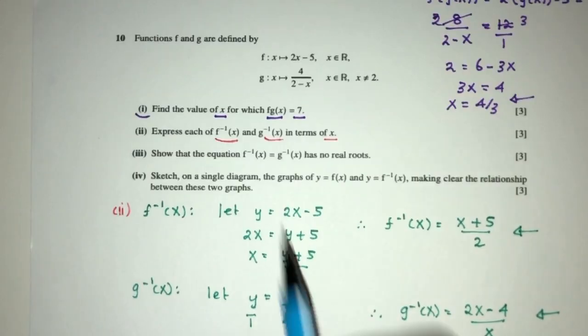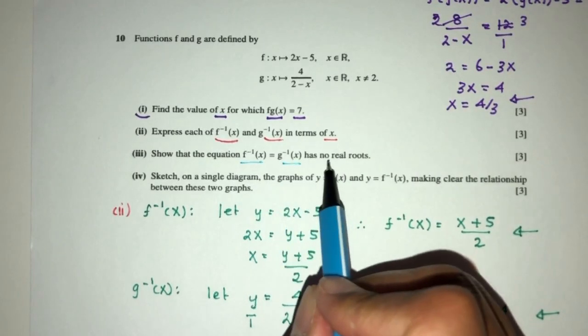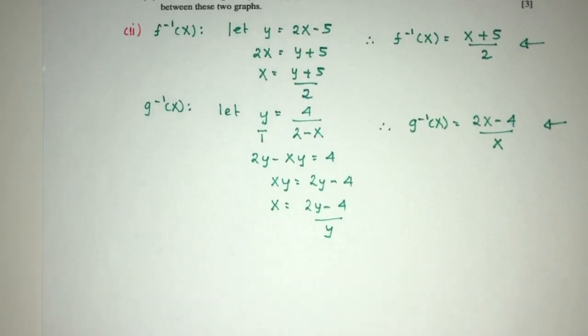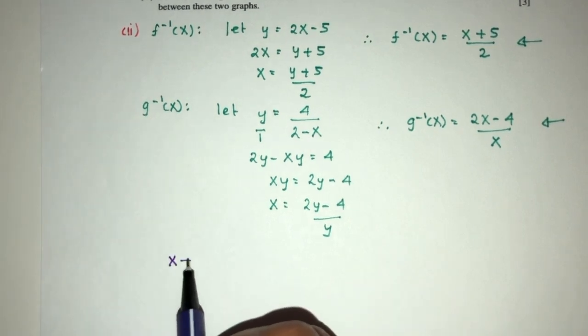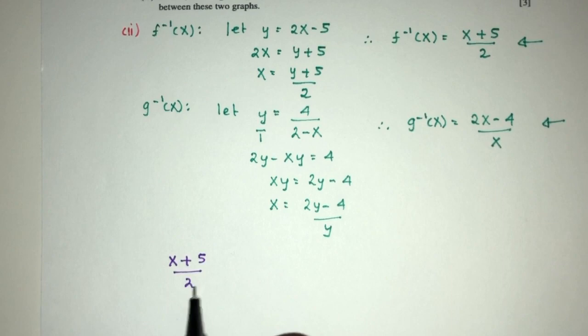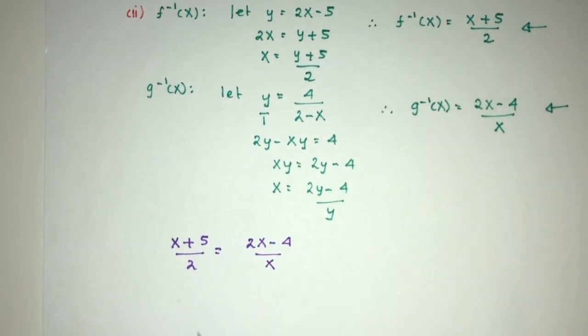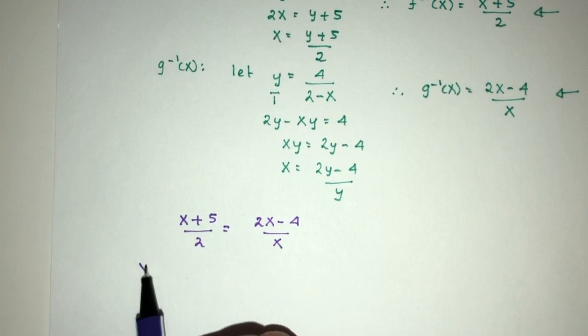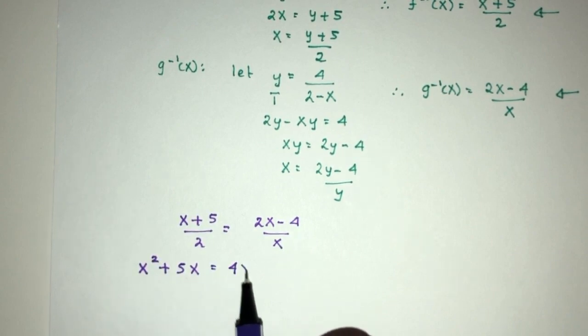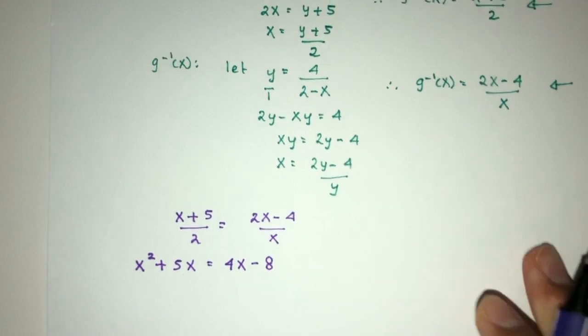For part 3, we have to show this equation has no real roots. Let's equate those two equations. We have g inverse: (x+5)/2, and g inverse: (2x-4)/x. Simplify by cross multiplying. You will have x² + 5x = 4x - 8.